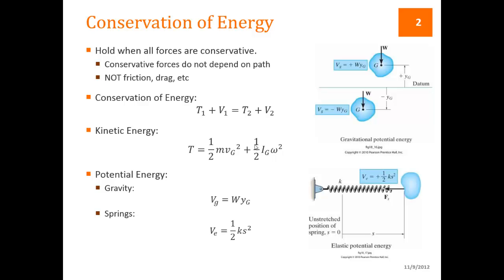The potential energy expressions are the same as what we used with particles. We generally have potential energy from two sources. From gravity, the potential energy is the weight times the height, where the height is measured above a chosen datum. If the height is below that datum, then this would be negative.